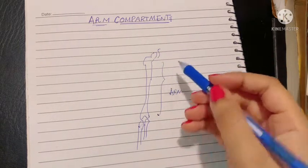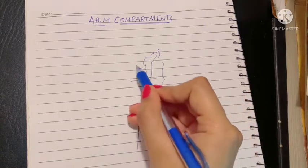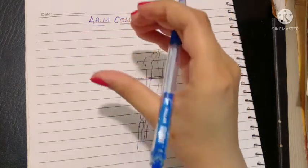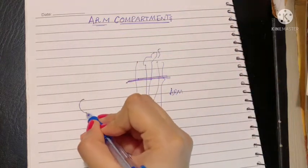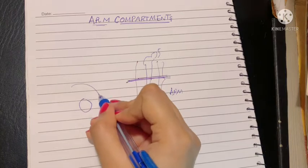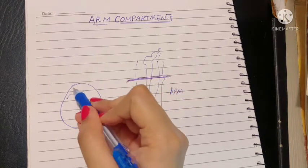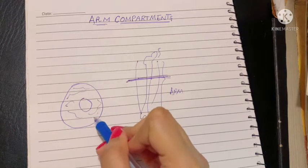So if you take a cross section of your arm, if I cut it right here and look from above, what I will see is a bone and the skin will be surrounding it and there will be various muscles, but there is more to this.